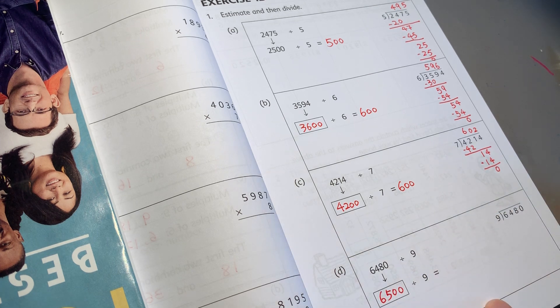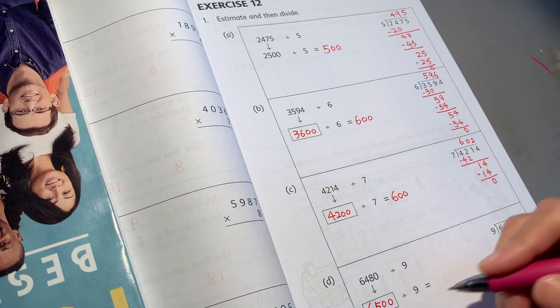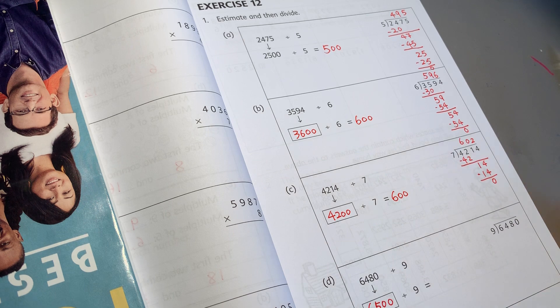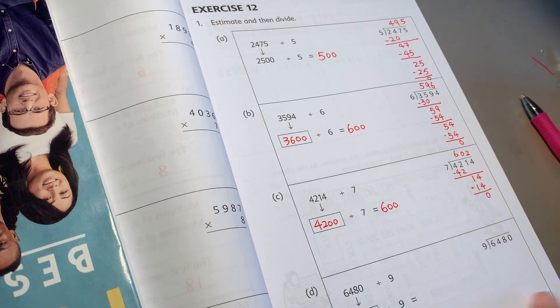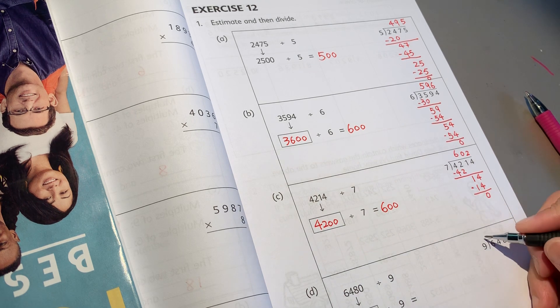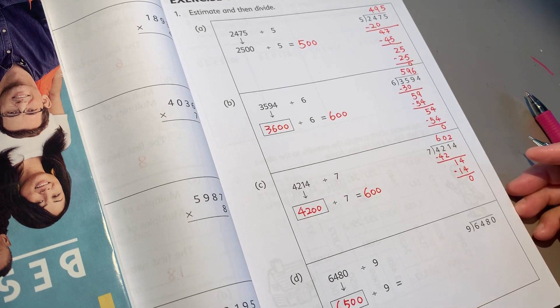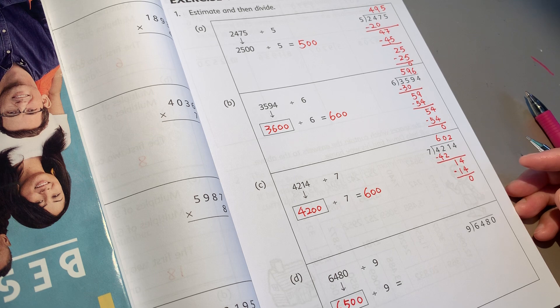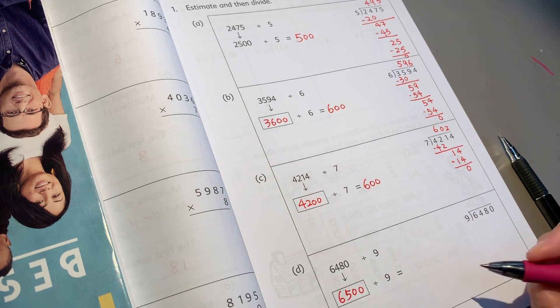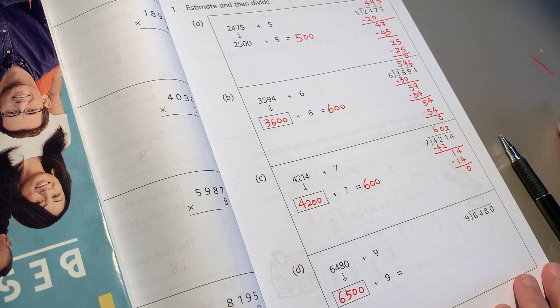五十二. 6500除以9, 6500除以9, 6480 actually easier to do. 它是什么意思6480, 那我就写成6480.